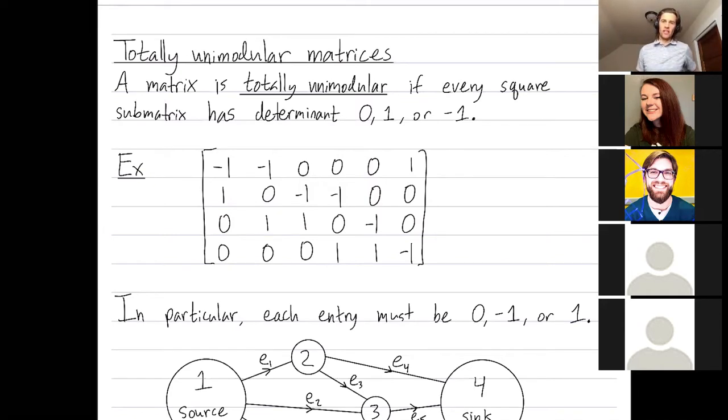They arrive in vertex covers. They arrive in matchings for bipartite graphs. And that's just because the incidence matrix of bipartite graphs, as we'll see in the next video, those are totally unimodular. Totally unimodular matrices also arrive in max flow min cut problems.